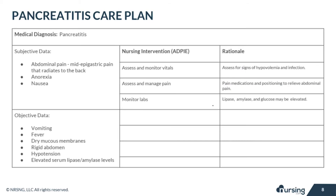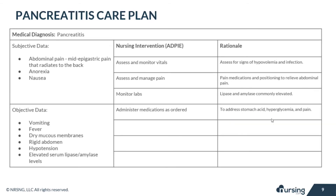Monitor your patient's lab values, including lipase, amylase, and glucose levels. Remember that insulin is secreted by the pancreas. The lipase level could be elevated for up to 12 days, but amylase returns to normal within a few days. Administer medications as ordered, which may include agents to address stomach acid, manage hyperglycemia if present, and of course pain medication.